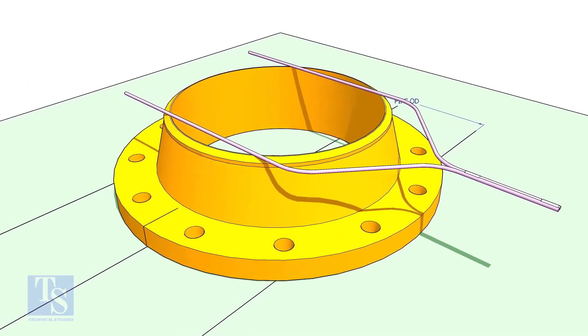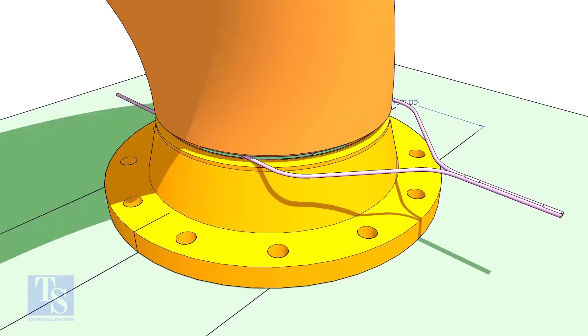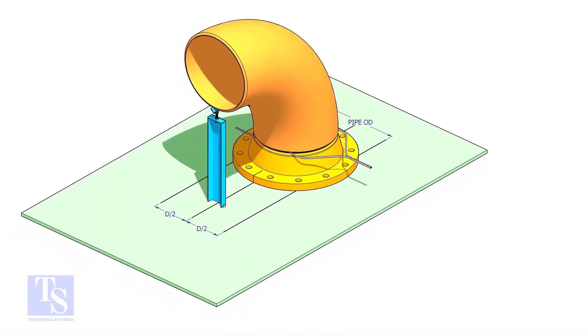Put the gap rod and elbow on the flange. If required, make an adjustable support to hold the elbow in vertical position.